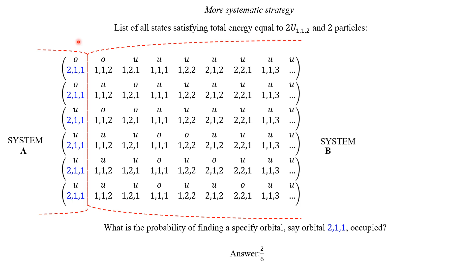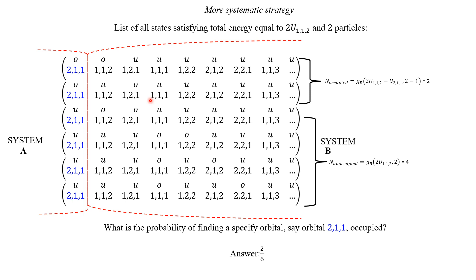Now we're going to make a conceptual — not physical, only conceptual — division. We're going to call the orbital of interest system A, and all the other orbitals we're going to call system B. We're not doing any physical modification; we're just determining a new language. By definition, system B is the system composed by all orbitals except the orbital of interest. With this conceptual division, we can express the number of states of the total system having the orbital of interest occupied in terms of the multiplicity of system B.